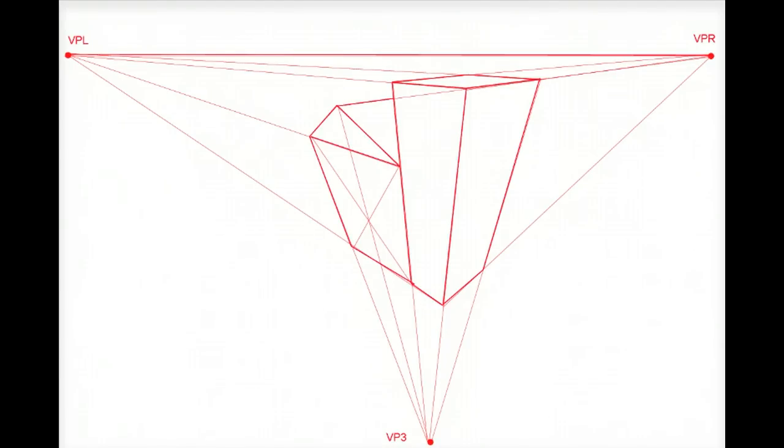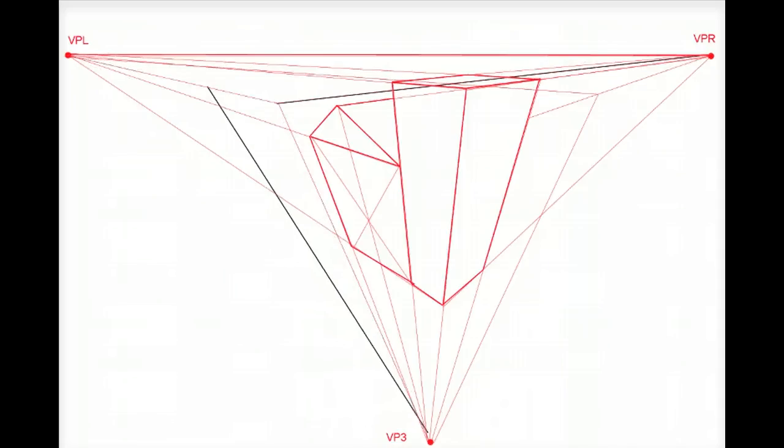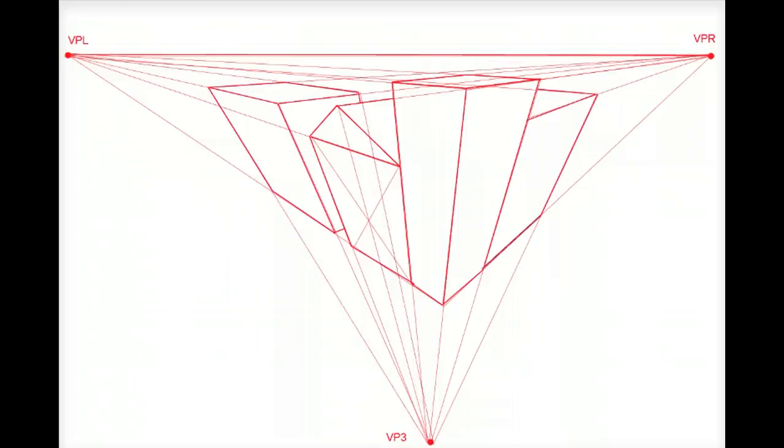So a lot of what you learned in two point perspective carries over to three point. You just need to remember to apply it to the three vanishing points. In two point perspective you have vertical lines and in three point perspective those vertical lines instead travel toward the third vanishing point below.